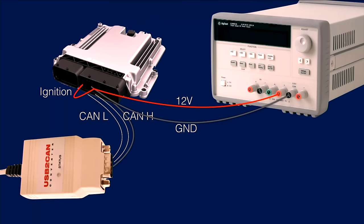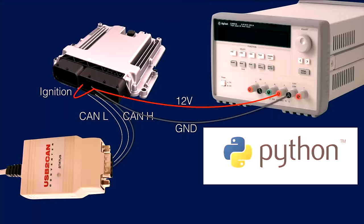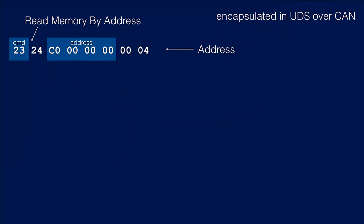Once we have the setup, we can boot the ECU and use Python to talk to it, which is great. We can use SocketCAN, which is the Linux CAN support. We can even use MicroPython if we want a smaller device to put in a car. In modern cars there's a protocol called UDS. Basically, you can ask the ECU, "I want to read memory by address" — you give it an address, ask it to read four bytes, and it returns data.